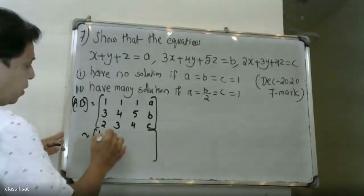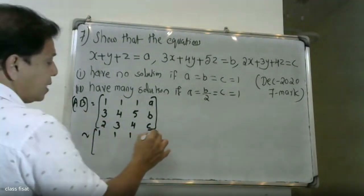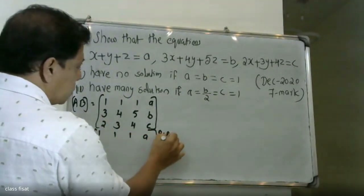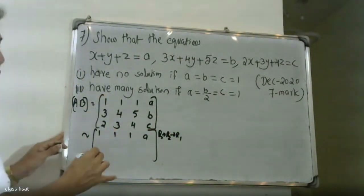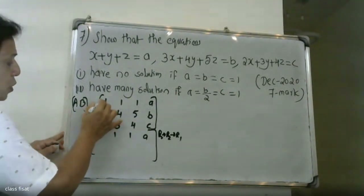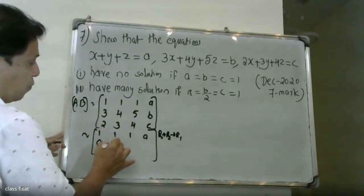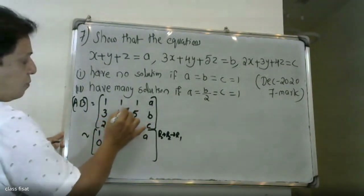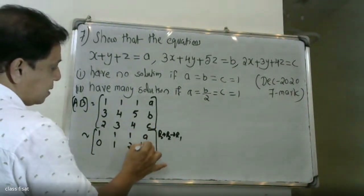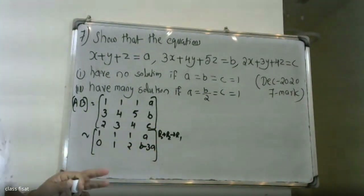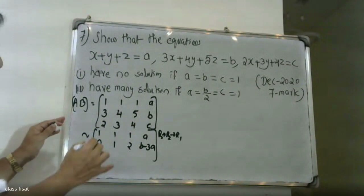The first row: 1, 1, 1, 1. The second row: R2 changes to R2 minus 3R1. The resulting second row gives: 0, 1, 2, b minus 3a.